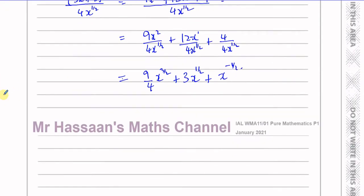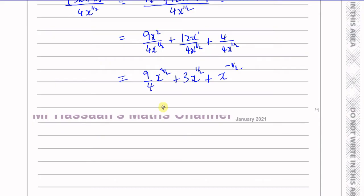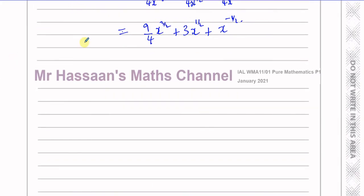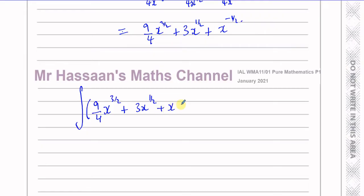So now we are ready. This has been prepared and got ready — we need to integrate it. So this expression is 9/4 · x to the power of 3/2, plus 3x to the power of a half, plus x to the power of negative a half, and I'm going to integrate this now with respect to x.